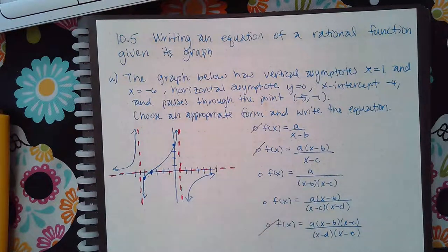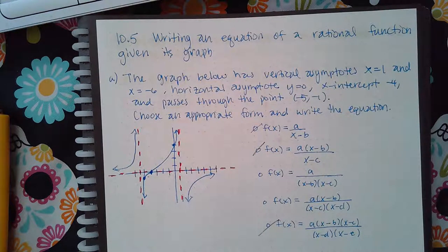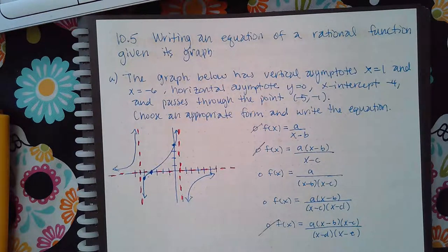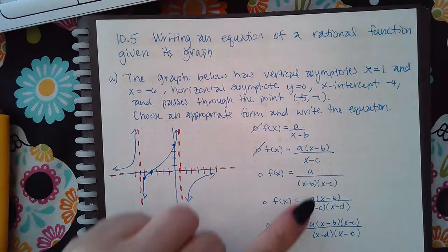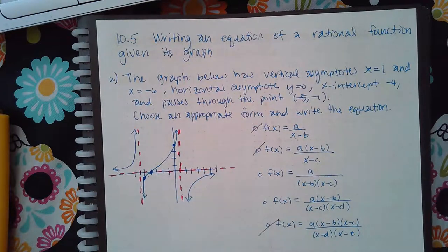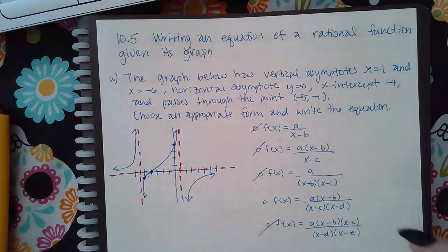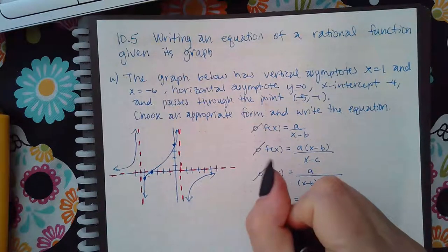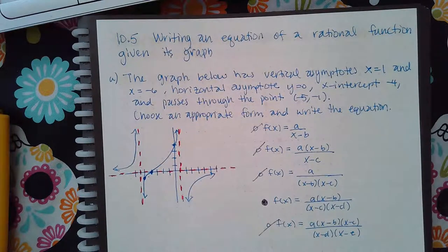Now it tells me I have an x-intercept, and x-intercepts come from the numerator. Because I only have one x-intercept, I should only have one factor with x in the numerator. One option doesn't have any x factors in the numerator, so it's not going to be that one. It's going to be this form here — that's the form I select for this information.